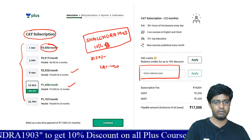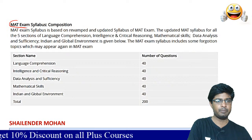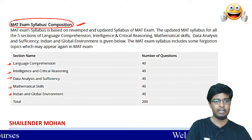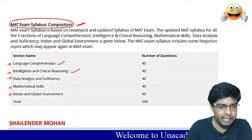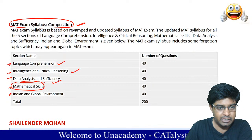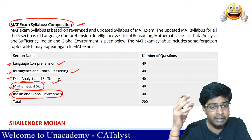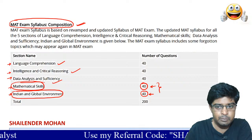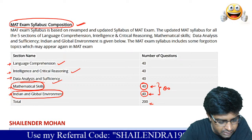Moving on to today's session — we are going to discuss MAT syllabus composition. There are five sections: one is language English, two is intelligence and critical reasoning, three is data analysis and data sufficiency, four is mathematical skills, and five is Indian and global environment. Today's section is all about Indian and global environment, which contains approximately 40 questions. Mathematical skills also has 40 questions, making 80 questions out of 200 total.